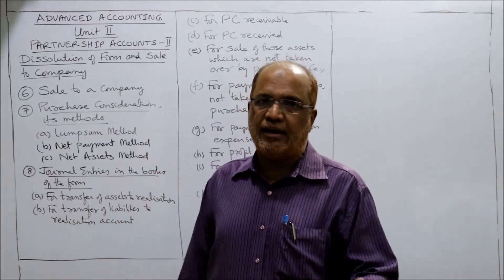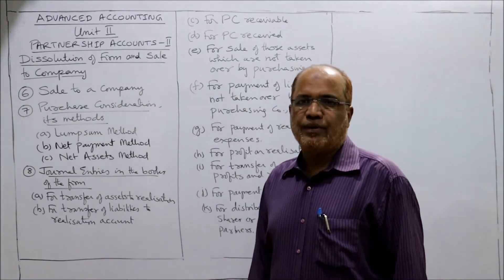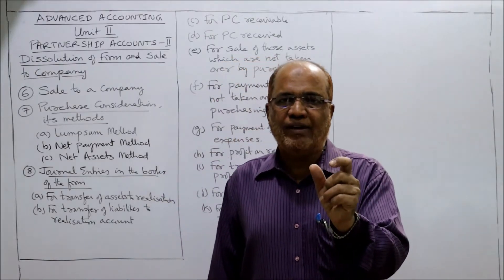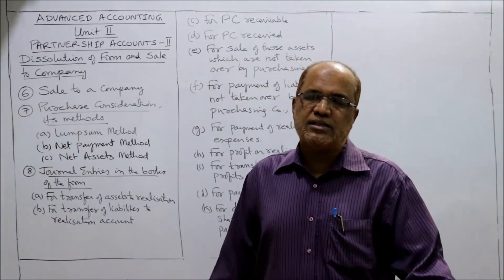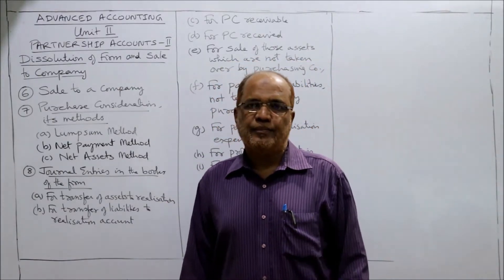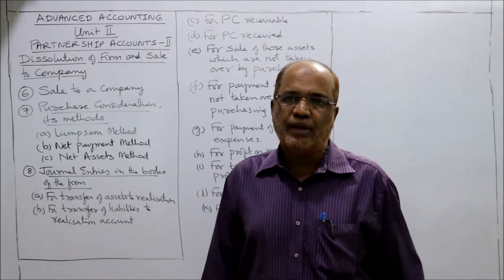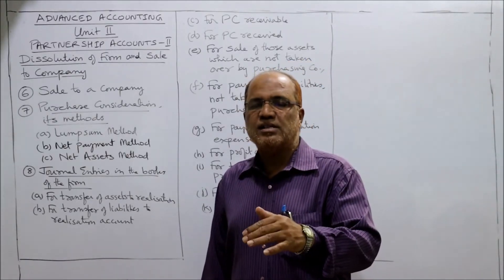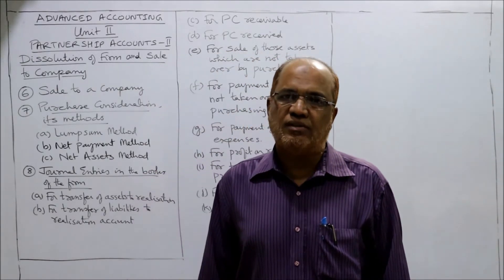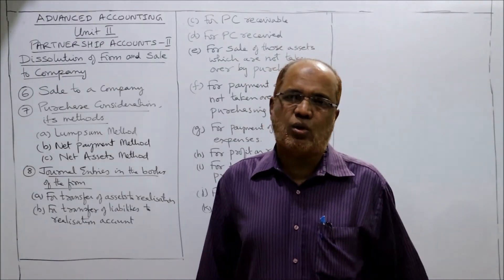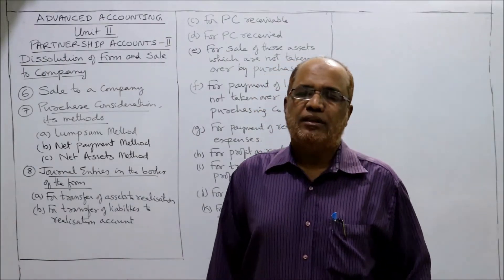There are different methods for calculating the purchase consideration. The first method is the lump sum method, where the purchasing company declares a fixed lump sum amount. For example, XYZ company agrees to pay 10 lakh rupees for purchasing the PQR firm. This 10 lakh rupees lump sum amount is called the purchase consideration.